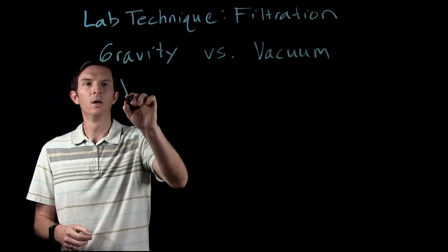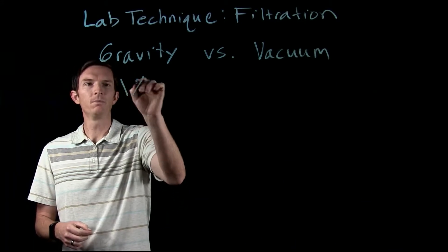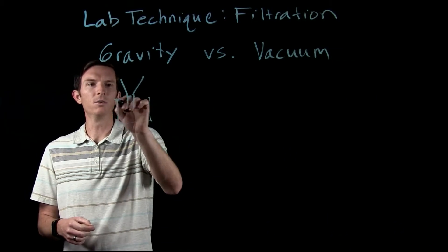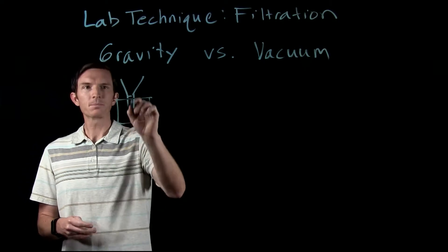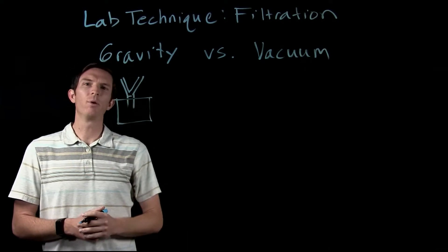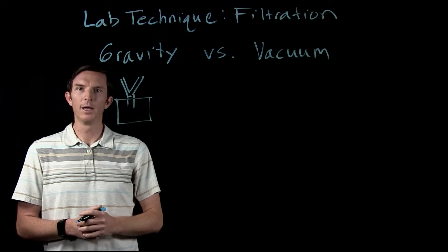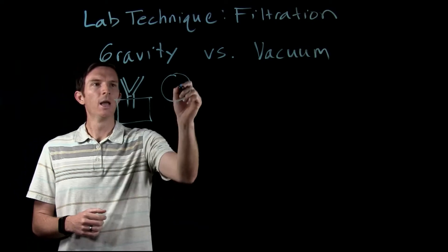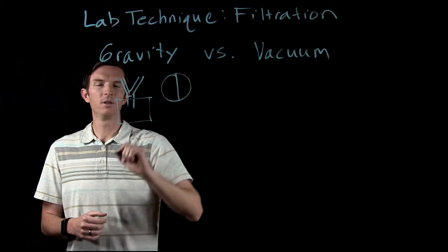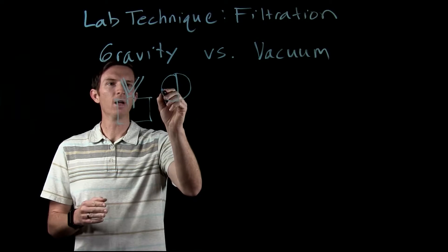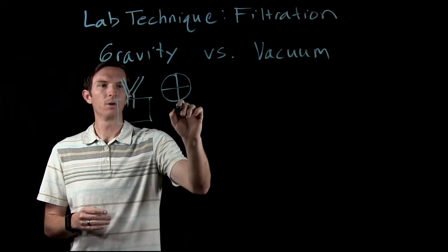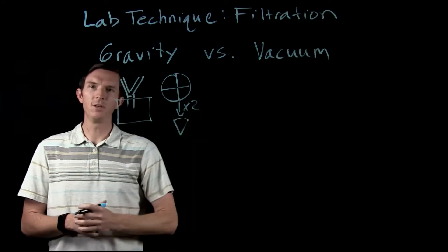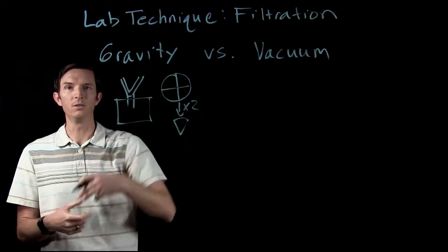So gravity filtration - we take a funnel and have that funnel typically run into a beaker or something, and then we'll put our filter paper in there. Now remember when we take our filter paper, we have our round funnel paper and usually we fold it once in half and then we'll fold it in half again. When that happens we'll end up with kind of a V shape that we can open up and put into our funnel.